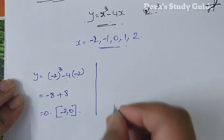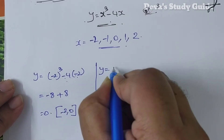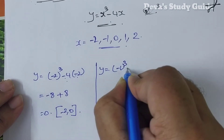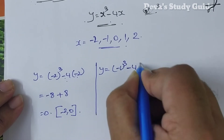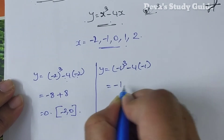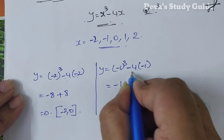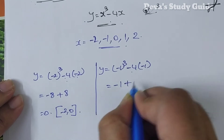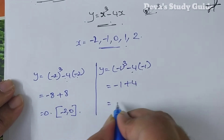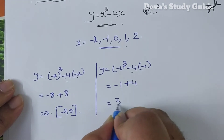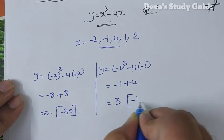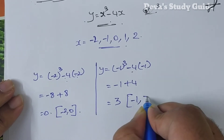For x equals minus 1: minus 1 whole cube minus 4 into minus 1 equals minus 1 plus 4 equals 3. So y is equal to minus 1 gives y equal to 3.